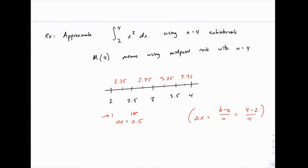So we'll find the height of each rectangle by evaluating x squared at 2.25, 2.75, and so on, and as we do, we'll multiply them by the width 0.5, and that'll give us the area of each rectangle.